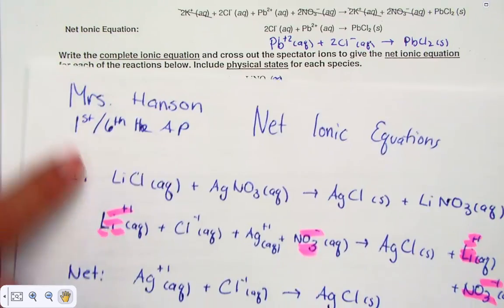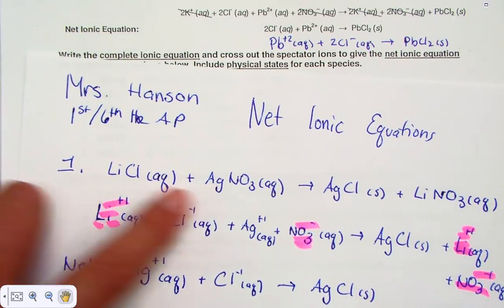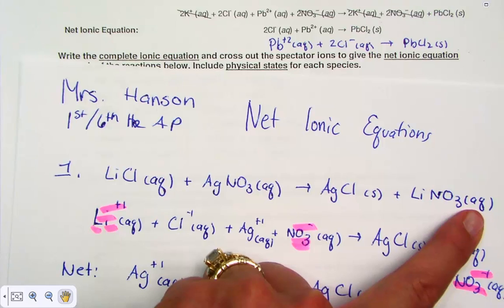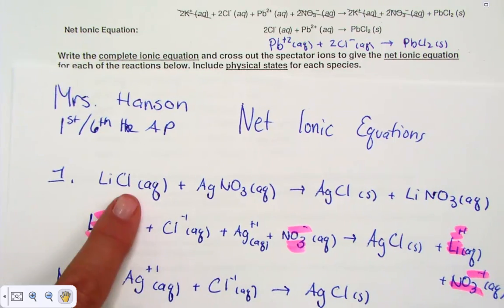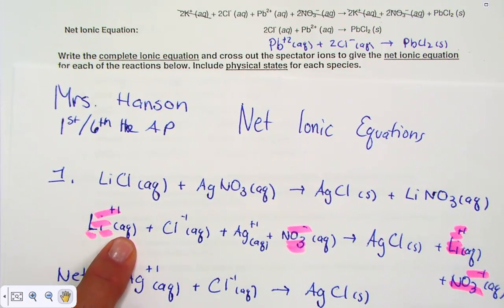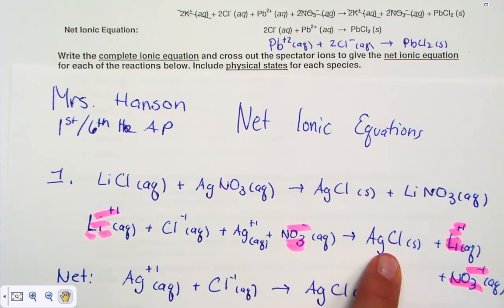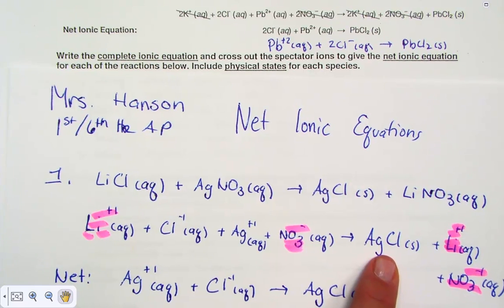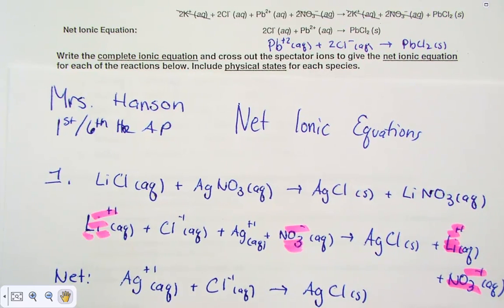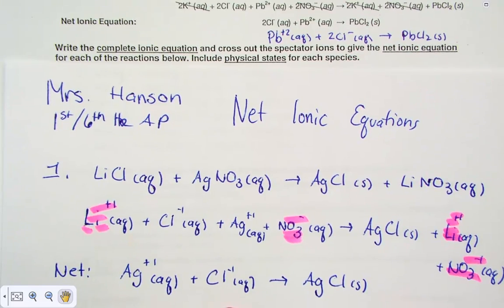We've done number one. We were given the molecular equations. I added on the states of matter adjective. I broke apart the strong electrolytes, those ionic compounds that are water soluble. I left together the driving force, our precipitated silver chloride. I then removed the spectators and wrote out the net ionic equation.